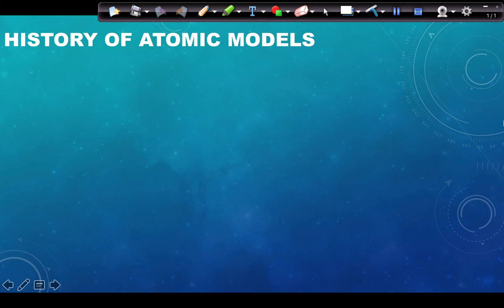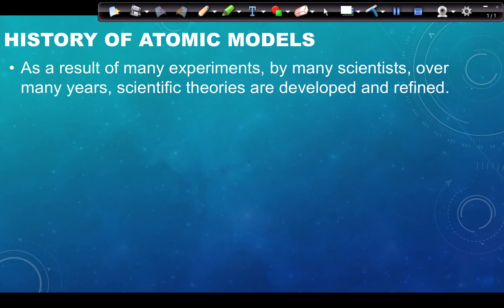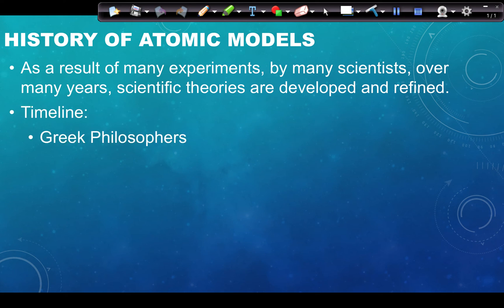First we're going to start with a little bit of history of atomic models. When we talk about that history, we need to keep in mind that just like any scientific concept, it is going to be a result of many experiments by many scientists over many years. Scientific theories and ideas do not come about based on one scientist or one experiment — we refine and develop theories constantly as new information comes about.